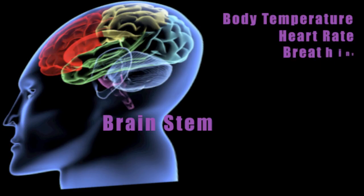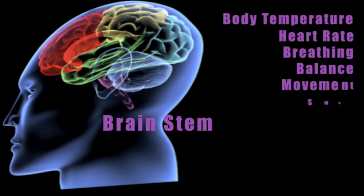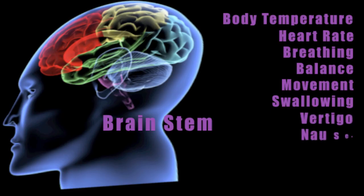With brain stem injury, we can lose efficient, effective management of heart rate or breathing rate. People also experience problems with balance and movement, and problems with swallowing food and liquids — something we should be able to take for granted. Brain stem injuries can also be associated with symptoms of vertigo where the world spins, often uncontrollably, as well as dizziness and nausea.